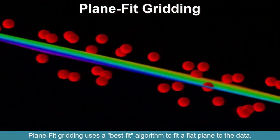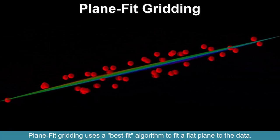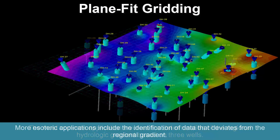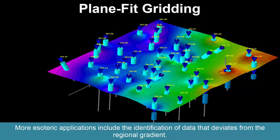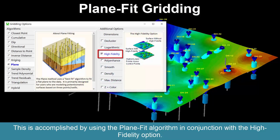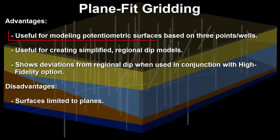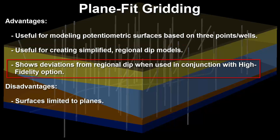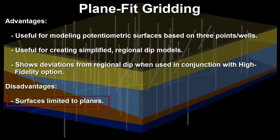Plane fit gridding uses a best fit algorithm to fit a flat plane to the data. The most common application involves the determination of the regional hydrologic gradient based on three wells. More esoteric applications include the identification of data that deviates from the regional gradient, accomplished by using the plane fit algorithm in conjunction with the high fidelity option. Advantages: useful for modeling potentiometric surfaces based on three points or wells, for creating simplified regional dip models, and for showing deviations from regional dip when used with the high fidelity option. Disadvantages: surfaces are limited to planes.